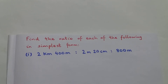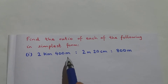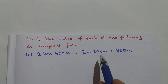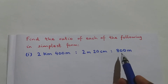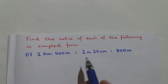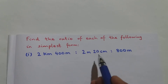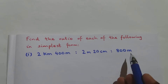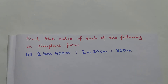Welcome. Here the question says find the ratio of each of the following in simplest form. The very first question is: 2 kilometers 400 meters is to 2 meters 20 centimeters is to 800 meters.